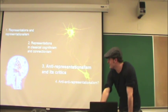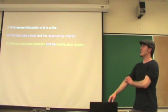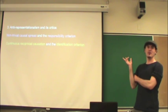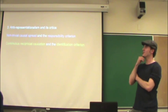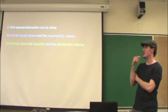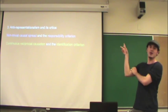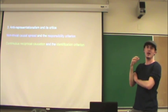Now to the meat of the presentation: anti-representationalism and its critics. I'm going to examine two objections to the representation story. One from non-trivial causal spread and another from continuous reciprocal causation. We'll see that they undermine each of the criteria we set out at the beginning.